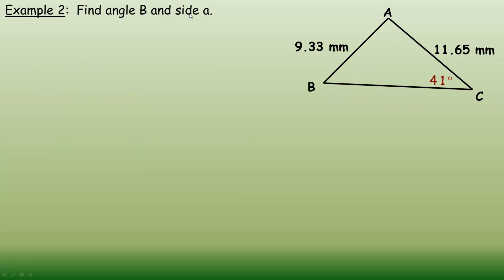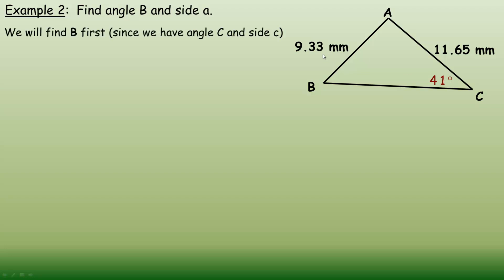In the second example we're asked to find angle B and also side A. We have an angle-side pair: angle C and side C. If you don't have an angle-side pair you may need a different method — there's another law called the law of cosines, which is covered in another video.